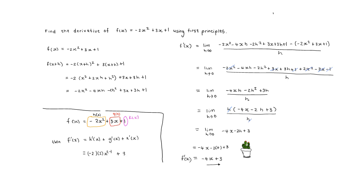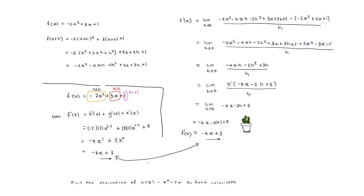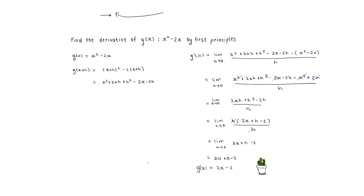Applying the power rule to 3x gives 1 times 3 times x to the exponent 1 minus 1, and the derivative of the constant term is zero. Simplifying: negative 2 times 2 is negative 4, and x to the exponent 1 gives negative 4x; 1 times 3 times x to the exponent zero equals 3; plus zero drops away. So f prime of x equals negative 4x plus 3 — exactly the same as the result from first principles.